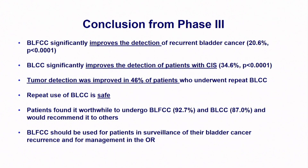The conclusion from this Phase III study was that blue light significantly improves detection of recurrent cancers, improved detection of CIS, and tumor detection was improved in 46% of patients. It was safe. The secondary goals — looking at detection in patients who had prior BCG, repeated use, and ability to detect CIS — all demonstrated benefits. Overall it was considered a successful study.